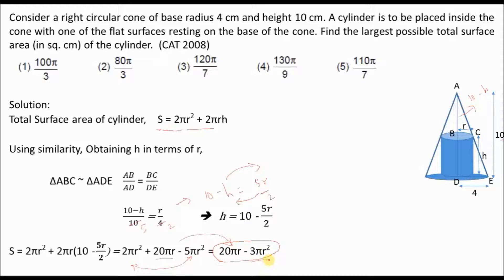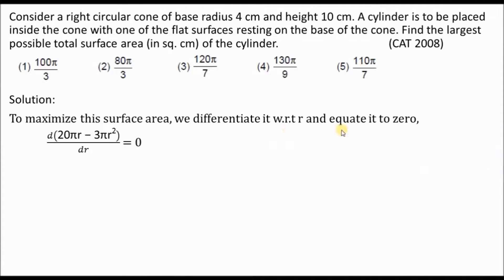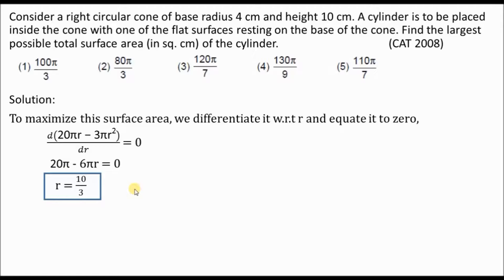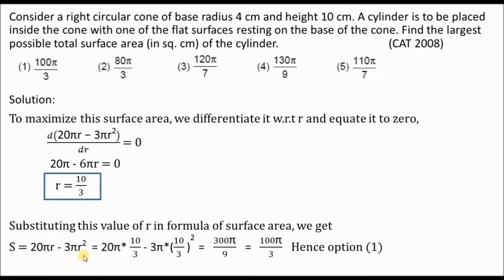Now I differentiate this expression with respect to r and equate it to 0. Differentiating 20πr gives 20π, and differentiating 3πr² gives 6πr. Setting 20π − 6πr = 0 gives r = 10/3. Substituting r = 10/3 back into S = 20πr − 3πr² gives a maximum surface area of 100π/3, which is option number 1.